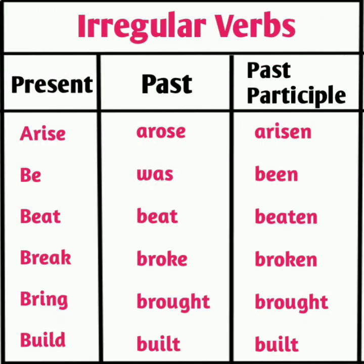Now let's see some irregular verbs. Arise, arose, arisen — base form arise है, past form arose हो चुका है, और past participle arisen हो चुका है. यहाँ past form भी change है और past participle form भी. Next: be, was, been. Beat, beat, bitten. Break, broke, broken. Bring, brought, brought. Build, built, built.